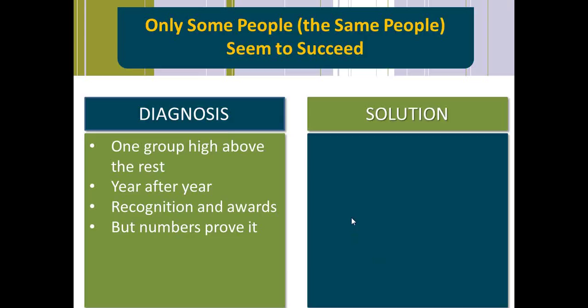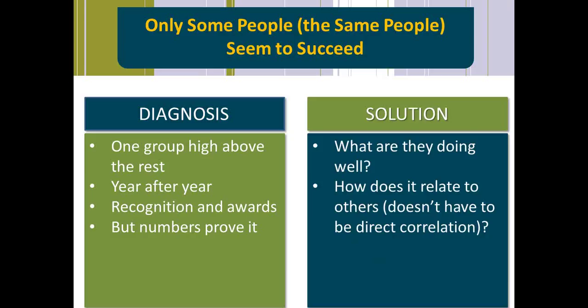What's the solution for this symptom? Figure out what they're doing well — like the hotel manager — and how it relates to others. It doesn't have to be a direct correlation. You might say how do bellhops have anything to do with customer service people on the phone? Well, bellhops are providing customer service — you just have to learn to dig into it and figure out the correlation. Then train on their best practices. This is such an underutilized tool in a training director's repertoire: best practices. We're so focused on what's going wrong because people only come to us when performance is poor and numbers are down. Instead, ask who's doing what well, figure out what they're doing, and train everybody else on that. It's a huge opportunity.